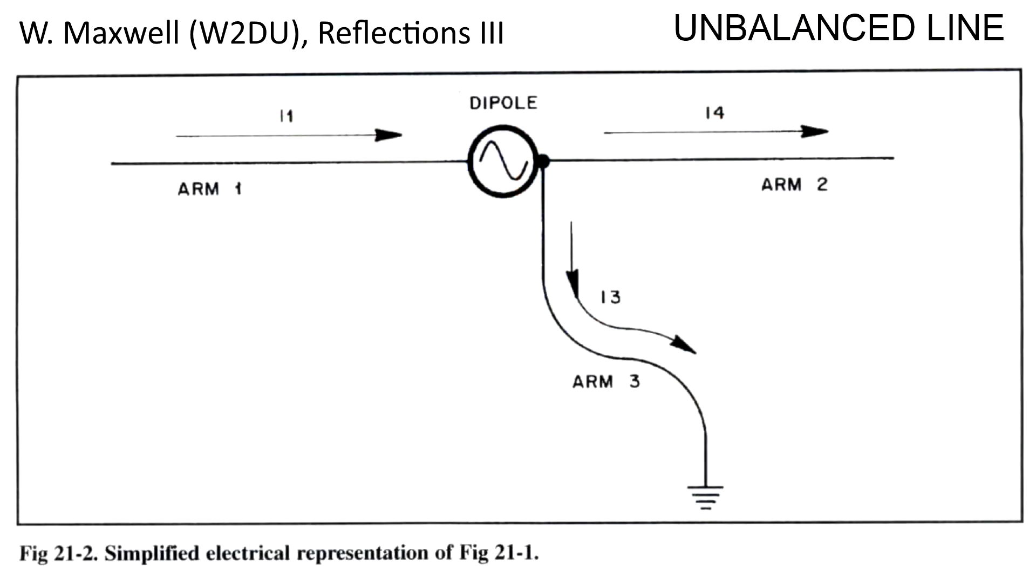Walt Maxwell, W2DU, in his book titled Reflections, modeled this behavior by saying that a generator at one end of a coaxial cable is like the same generator connected to the load but with one of its poles connected to the coaxial shield.